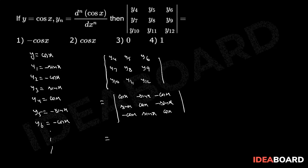Now, this equals to, by taking minus as common from third column, we have minus determinant of cosx minus sinx cosx.